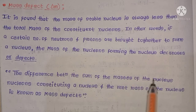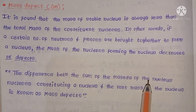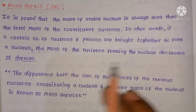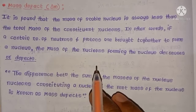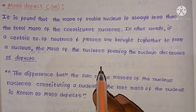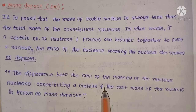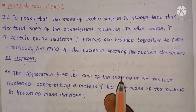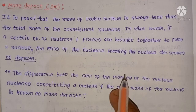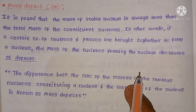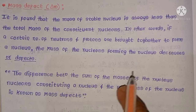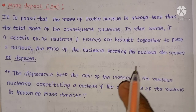This topic is related to nuclear chemistry. Before understanding mass defect, we need to understand atomic structure first. The structure of the atom consists of a central part known as the nucleus, which consists of two types of particles: one is a proton and another is a neutron. These two particles are called nucleons.